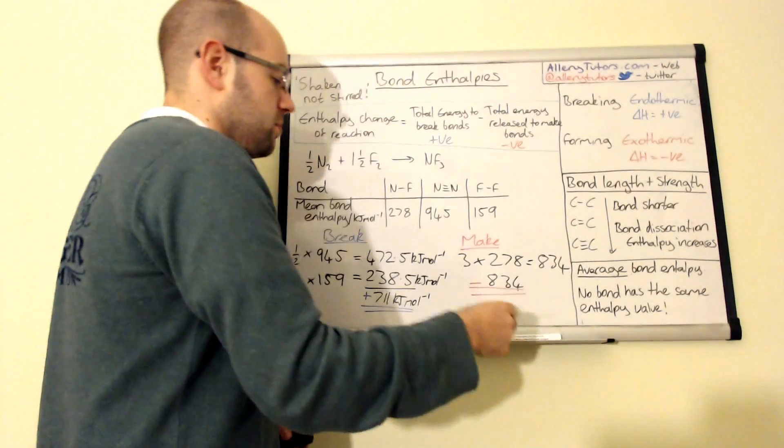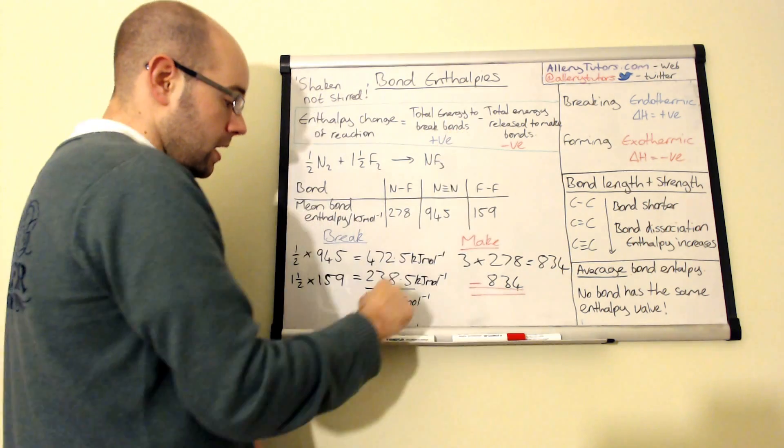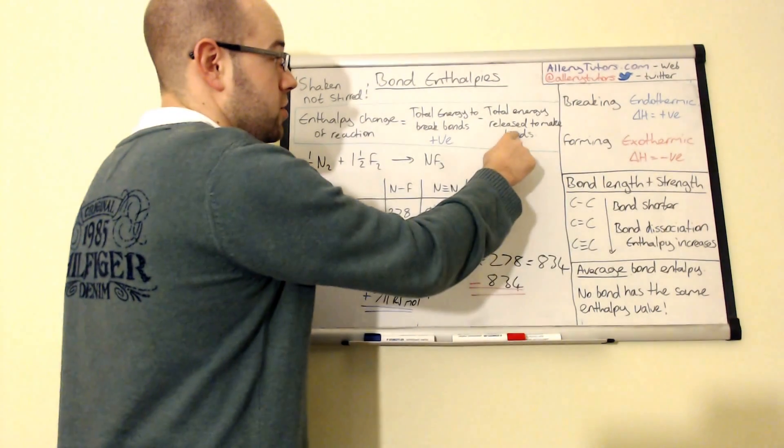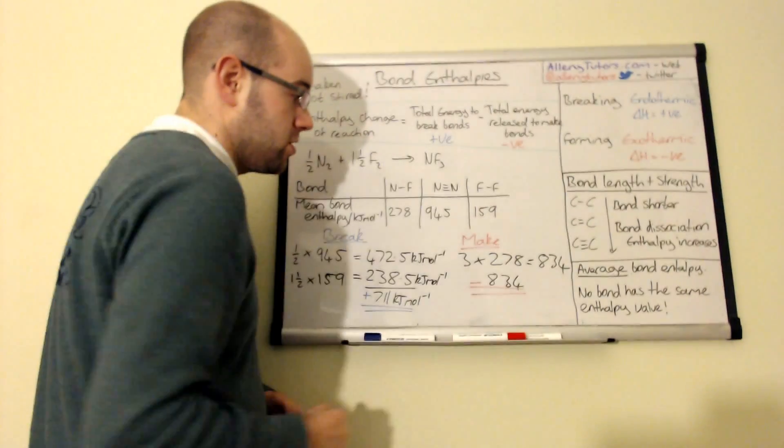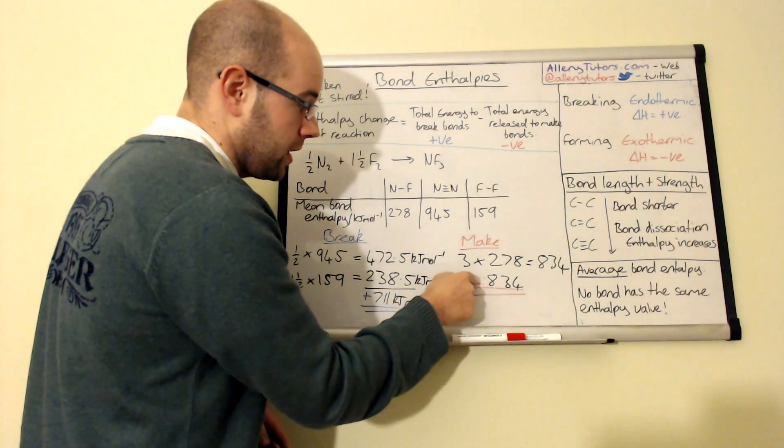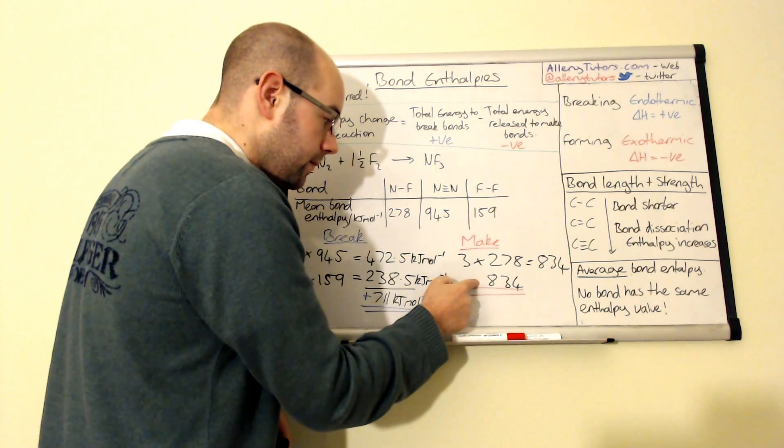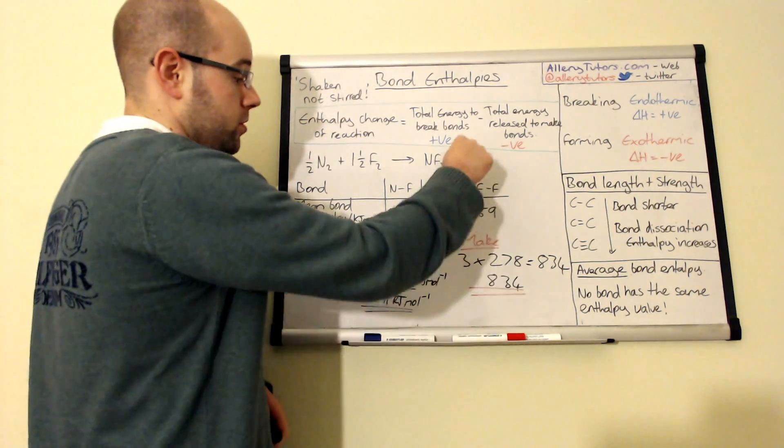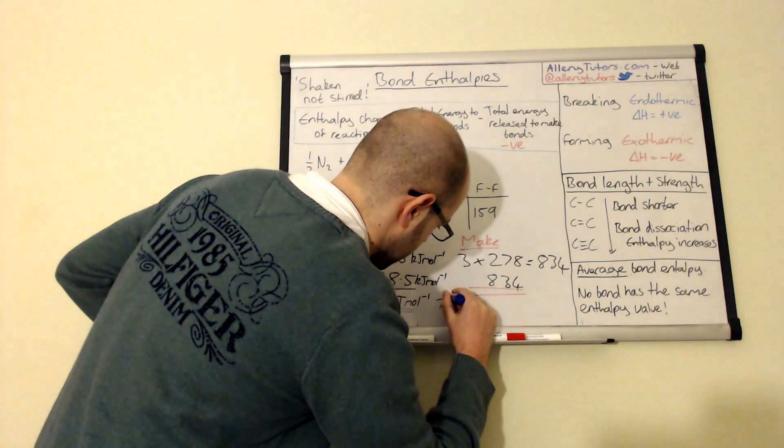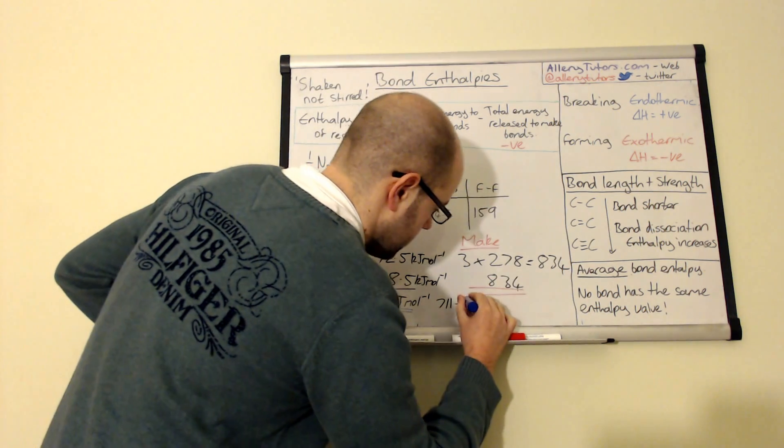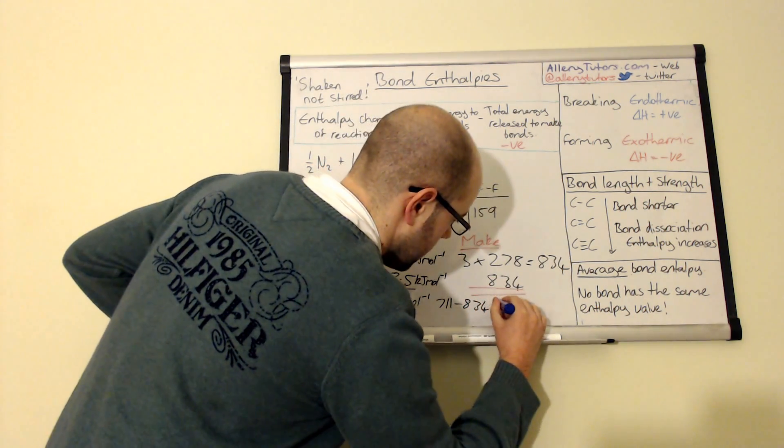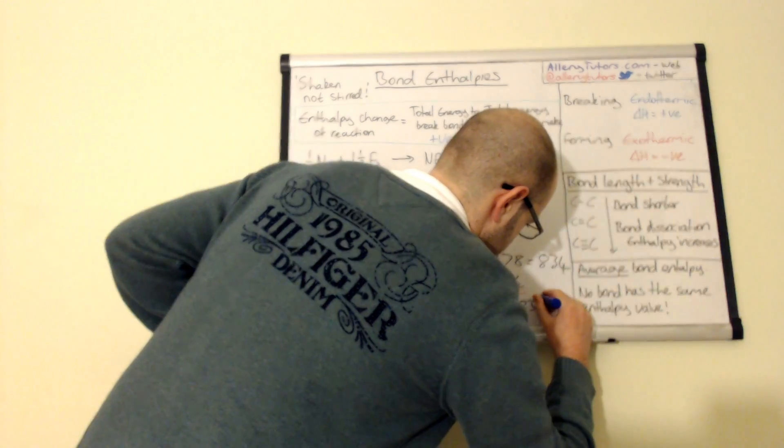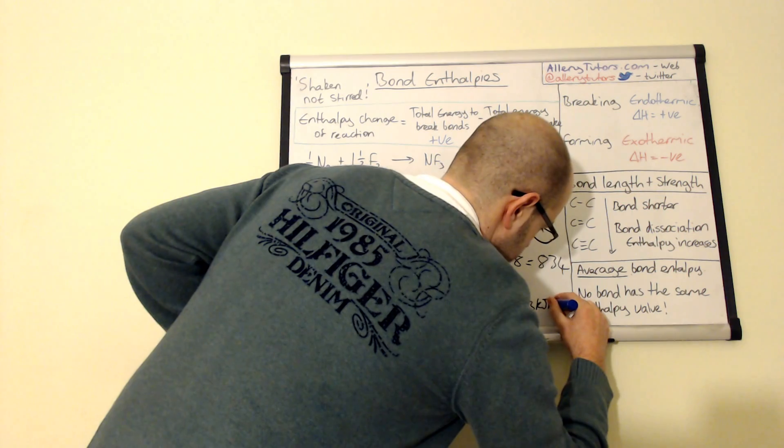So we put this into our calculator, so we do 711, and we're going to subtract that by the total energy released, which is 834. So if we just ignore that negative sign there, so I'll just rub them out, so this is 834. So we do 711, put that there, minus 834, and you should get a final answer of minus 123 kilojoules per mole.